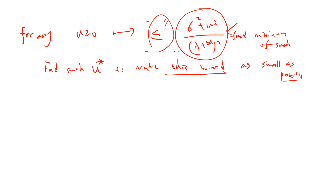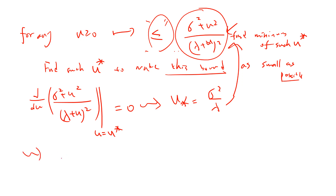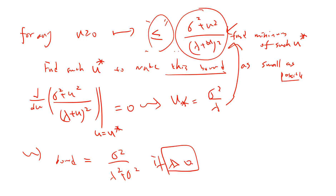Let's use calculus. Setting the derivative to zero, we find that u* = σ² / λ. Plugging back in, the bound becomes (σ² + λ²) / (something involving σ² and λ) — the result simplifies to a clean expression. The key technique here is: whenever you see a bound that depends on a free parameter u, find its minimum to make the bound as tight as possible.